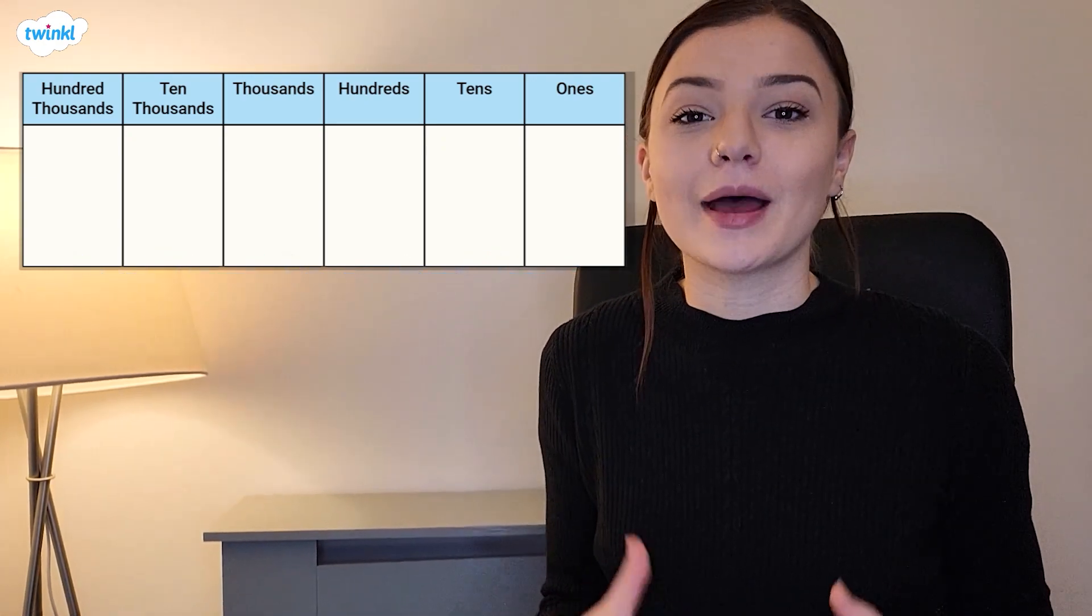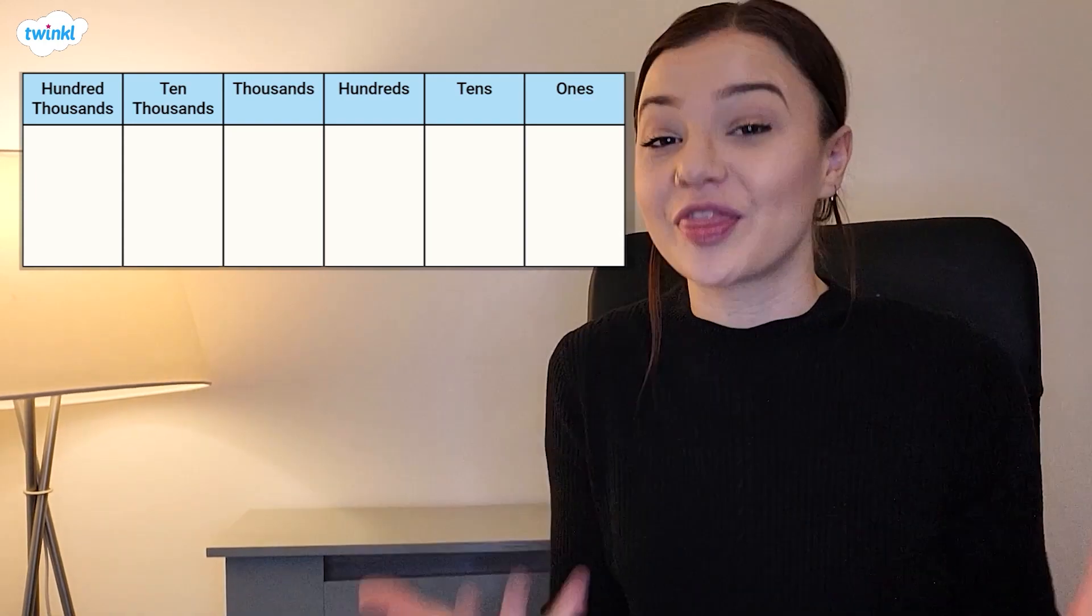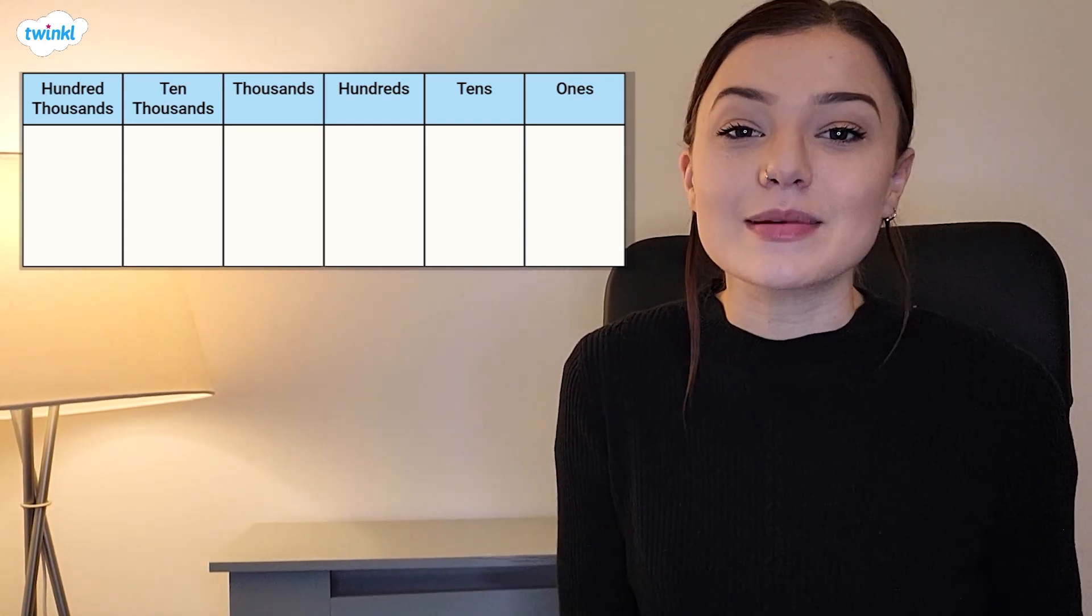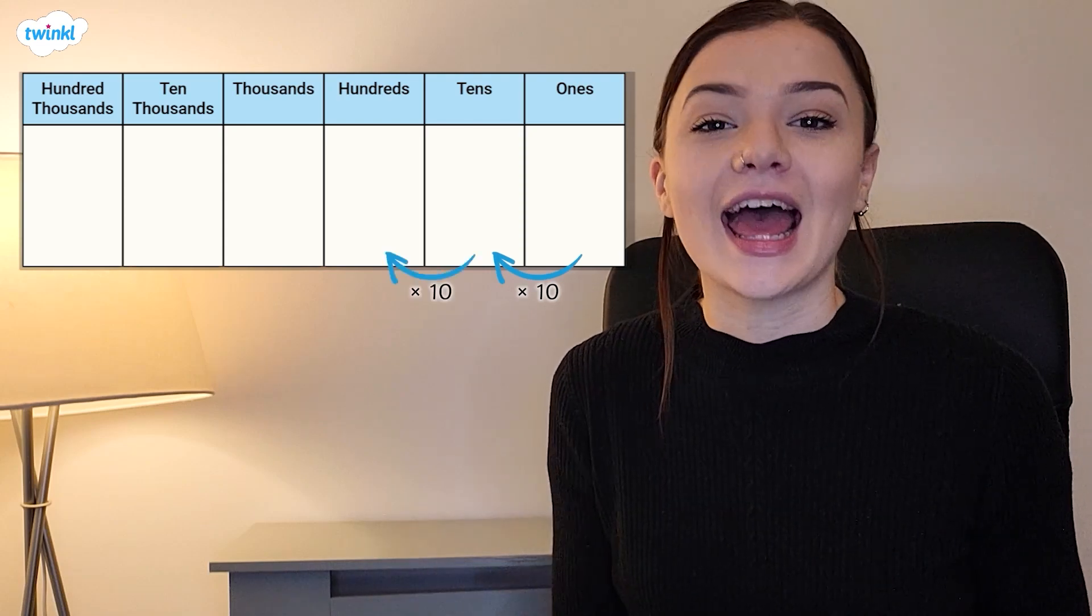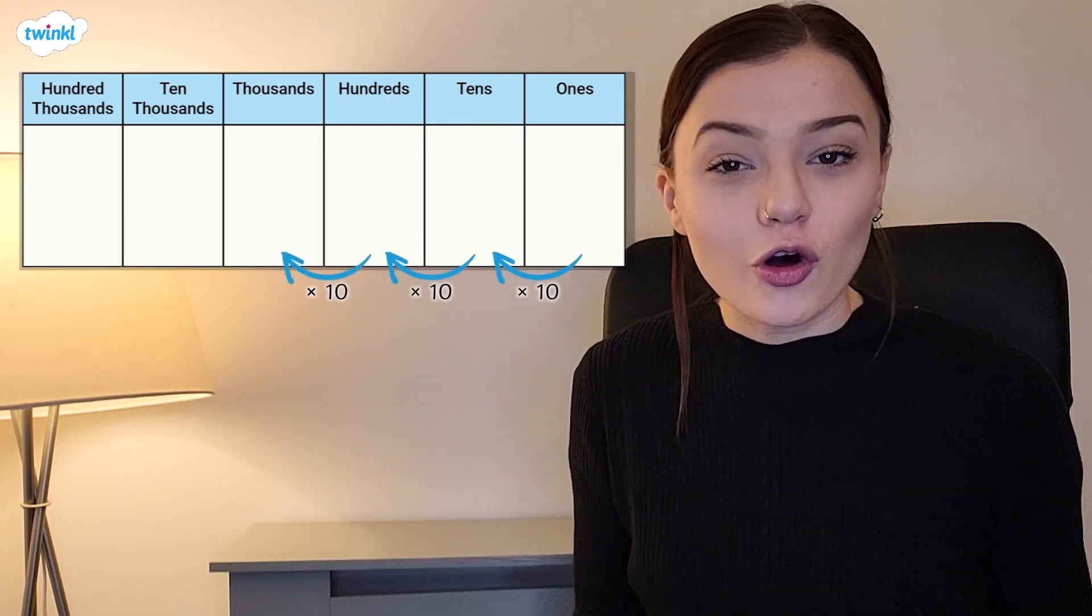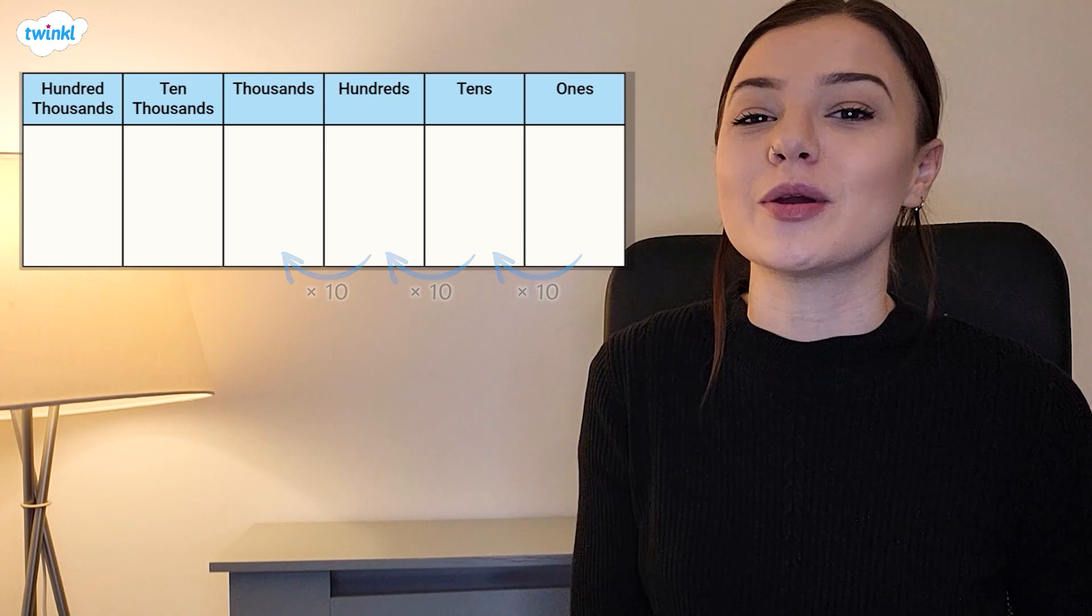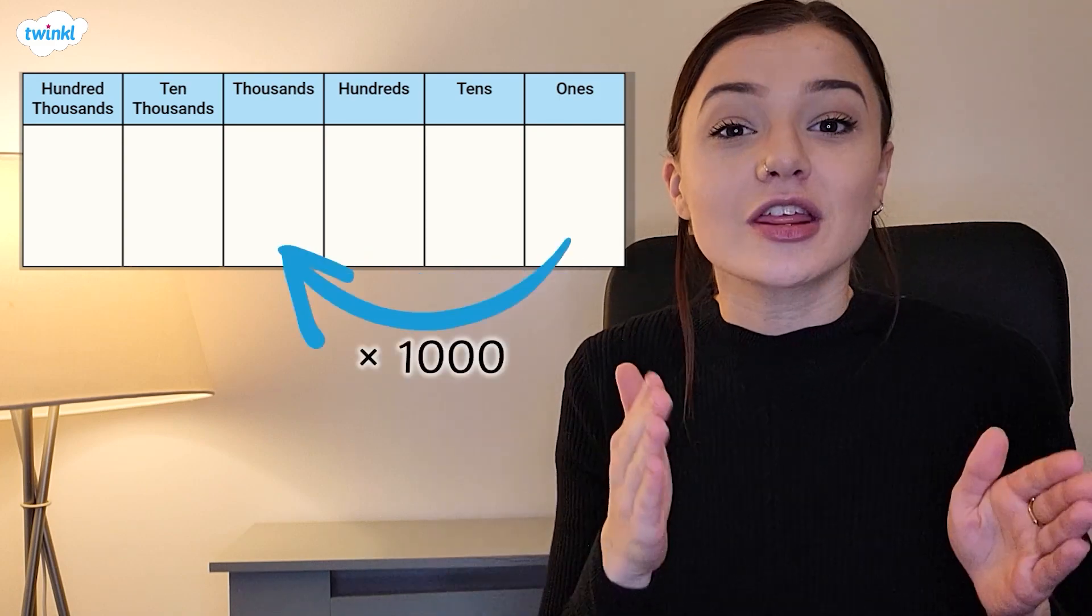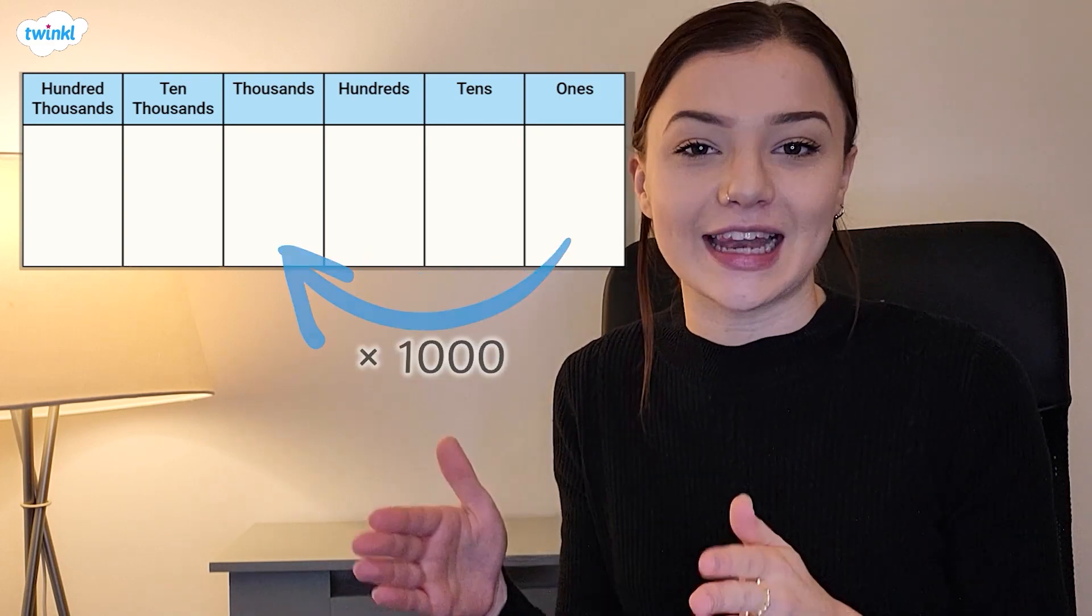When multiplying a number by 1000, or making a number 1000 times the size, it's the same as multiplying a number by 10, then by 10 again, and then by 10 again. Therefore, when multiplying a number by 1000, we move our digits or our counters three place value columns to the left.